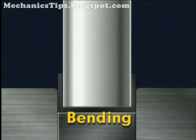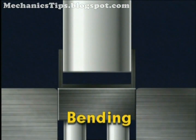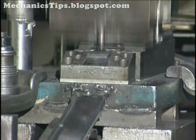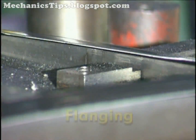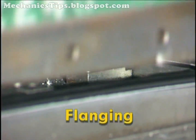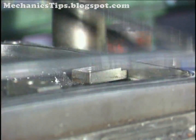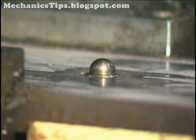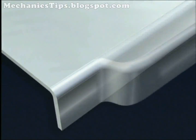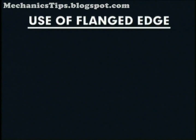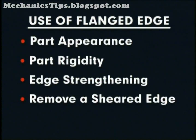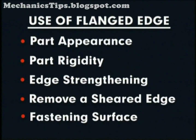Bending is performed on sheet metal to gain rigidity and to produce a part of desired shape. It is usually done to make structural stampings such as brackets, braces, and supports. Flanging is a forming operation similar to bending except that the flanged edge is shorter and narrower compared to the overall part size. A flange can be bent down along a straight or curved line and is used for appearance, rigidity, edge strengthening, removing a sheared edge, and to provide an accurately positioned fastening surface.